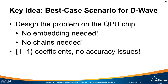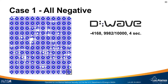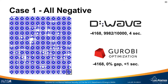So we came to another idea: building a best-case scenario for the D-Wave hardware. We design a problem directly on the D-Wave QPU chip so that we don't need any embedding at all, and there are no chains, so nothing can be infeasible. We only use coefficients of minus one or one so there are no accuracy issues. This is really the best possible scenario for this hardware. For a chip where all edges are encoded as negative values, it comes back with a value of minus 4168, 99% of the time, in only 10 seconds for all 10,000 samples. But if you put this into Gurobi, it gives you the exact same quality solution and proves it's optimal in less than one second.